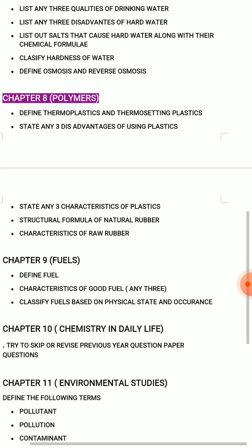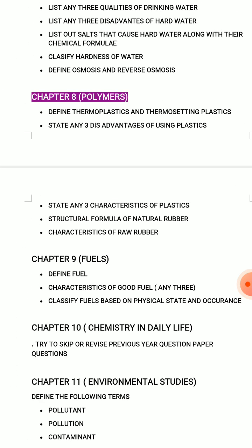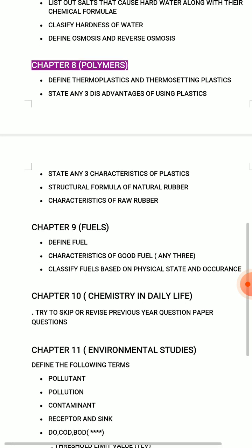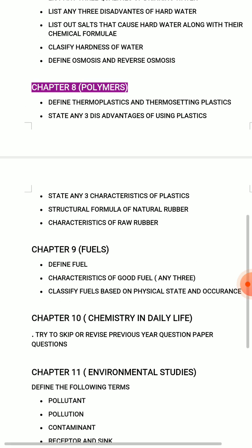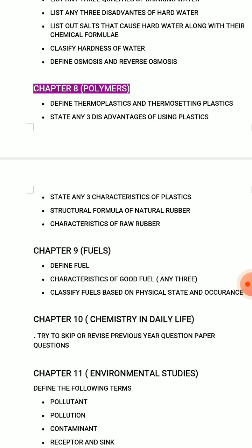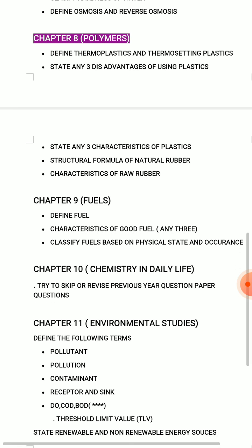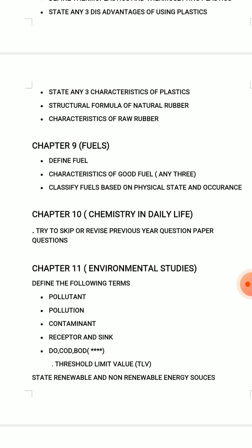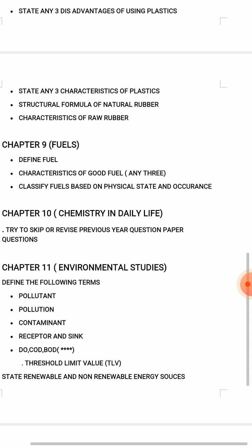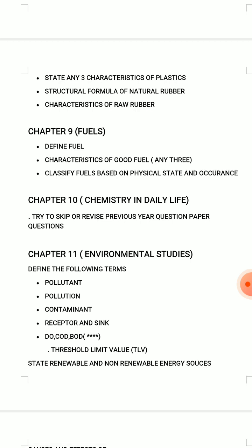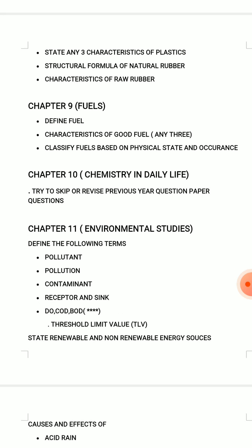Structural formula of natural rubber and characteristics of raw rubber. Then, in polymers, some preparations may be asked — Bakelite preparation, formaldehyde preparation, and then condensation and addition polymerization including polyethylene and polyvinyl chloride. Chapter 9: Fuels — define fuel, characteristics of a good fuel, classify fuels based on physical state and occurrence. Three short answer questions, very important — three characteristics of good fuel along with single-line definitions.